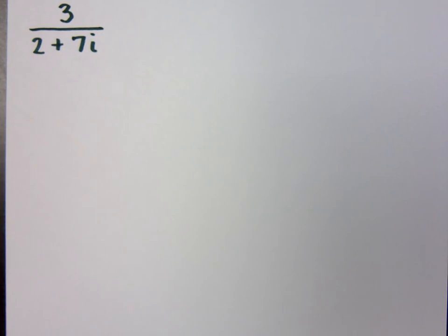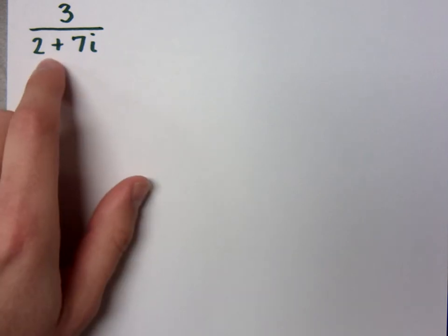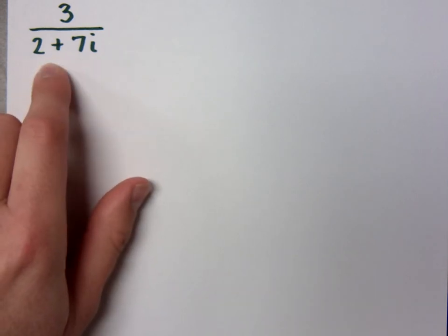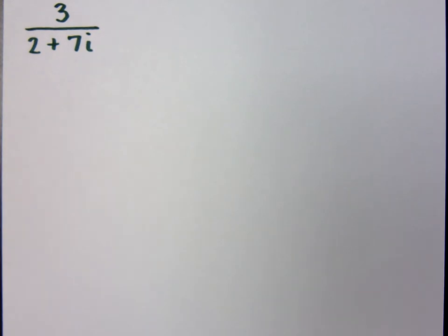In the last examples that we were looking at, we were dividing by a single term, a single piece, dealing with a complex number. When I'm dealing with this, in order for me to get rid of this...